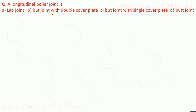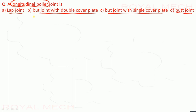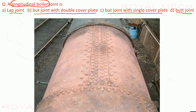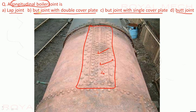A longitudinal boiler joint is: a lap joint; a butt joint with double cover plate; a butt joint with single cover plate; or a butt joint. Looking at the boiler joint, the longitudinal portion is a butt joint with double cover plate — cover plate one is visible, and one more cover plate is inside. Therefore option B is the correct option.